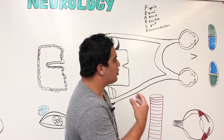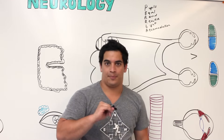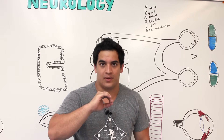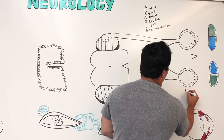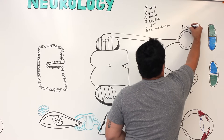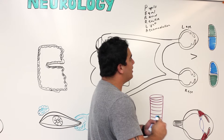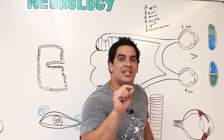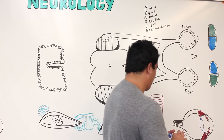Let's pretend we're going to take a light and shine it into someone's eye. In this example, we have the right eye and the left eye, and we're going to shine the light into the person's left eye to see how their pupils respond.